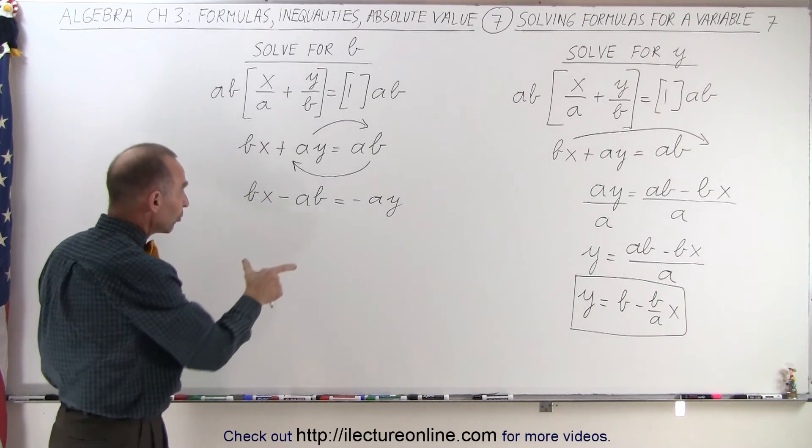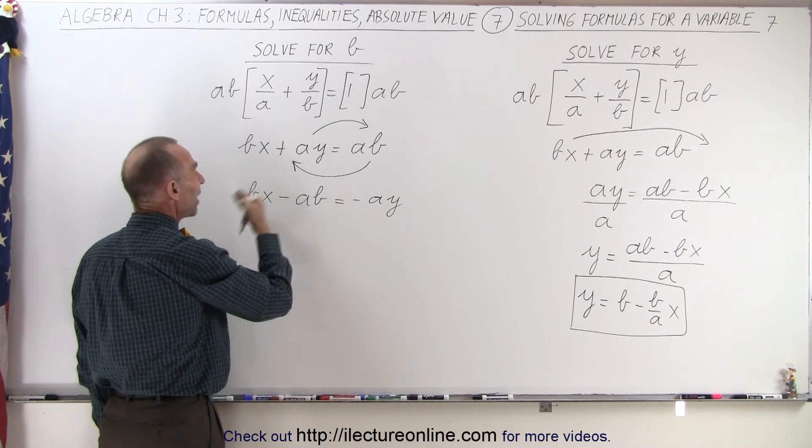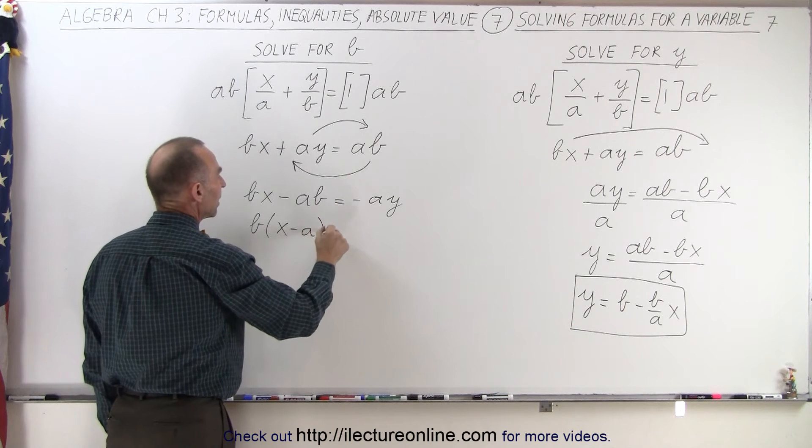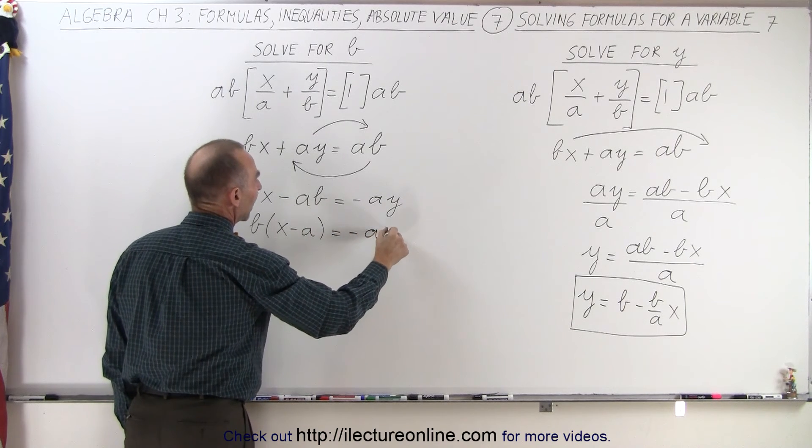Since I have two terms on the left side that contain a b, I'm going to factor out a b, so it becomes b times x minus a, is equal to minus a times y.